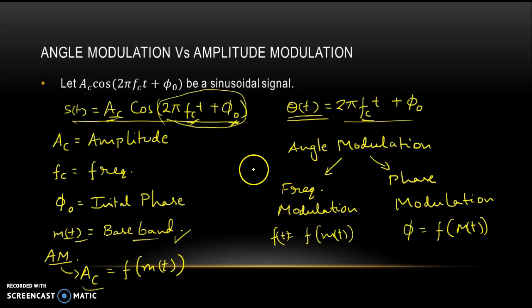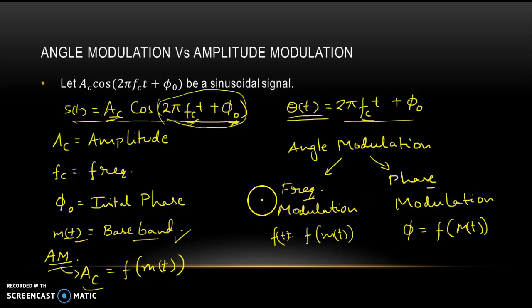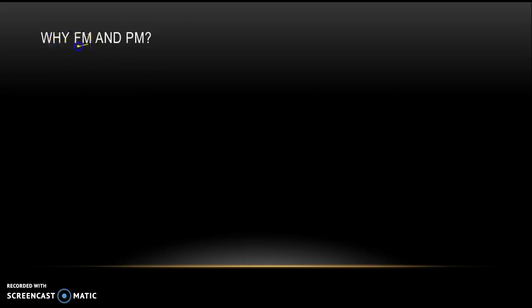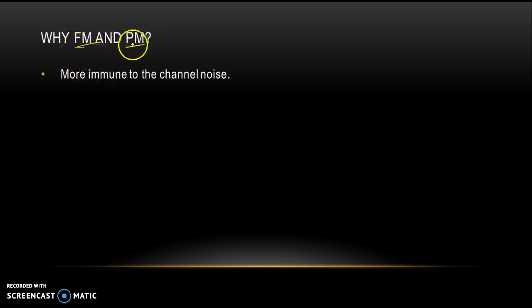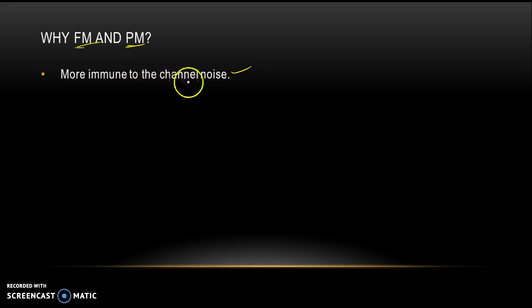A question arises: if we have amplitude modulation, then why go for frequency modulation or phase modulation? The answer is straightforward. First, frequency modulated and phase modulated waves are more immune to channel noise. AM signals cannot be transmitted for a long distance, but a frequency modulated or phase modulated signal can be transmitted over a very long distance.